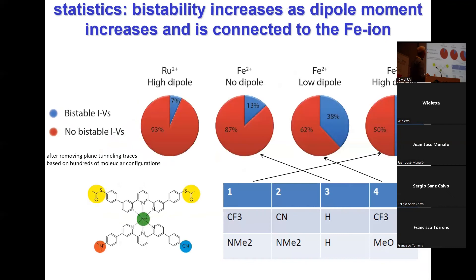We did the reference measurements: iron low spin, iron two-plus, no dipole, ruthenium. We did different side groups — no dipole moment, small dipole moment, high dipole moment, and ruthenium where you don't expect this switching. We still see a little bit with ruthenium, but you do see a correlation between having a dipole moment and switching with iron in the core versus a system like ruthenium where you don't expect switching.